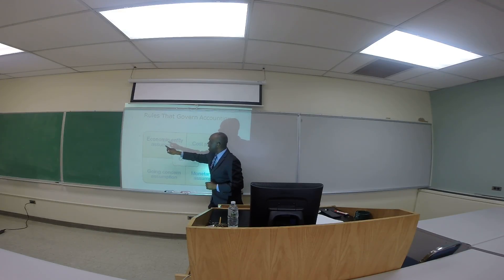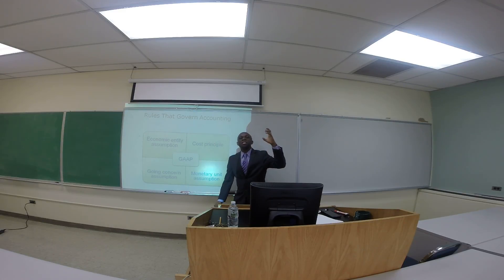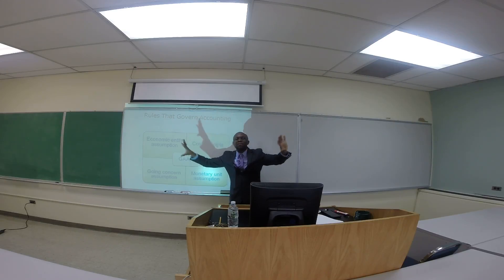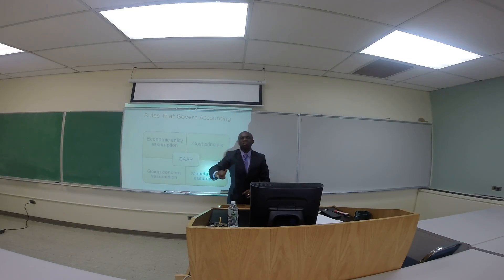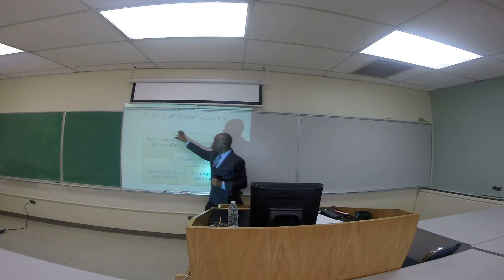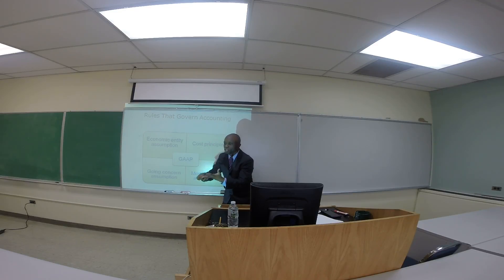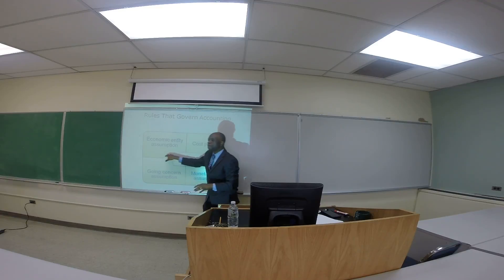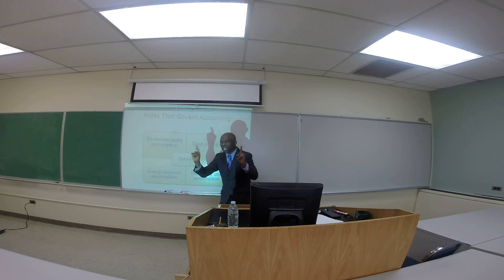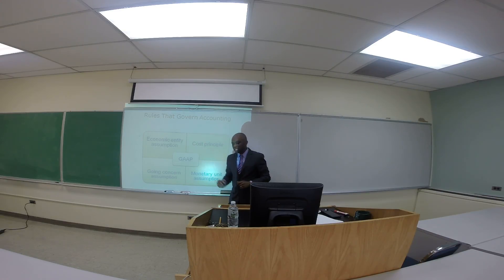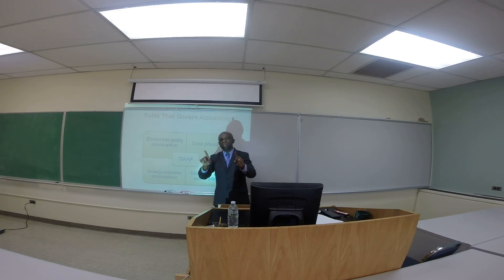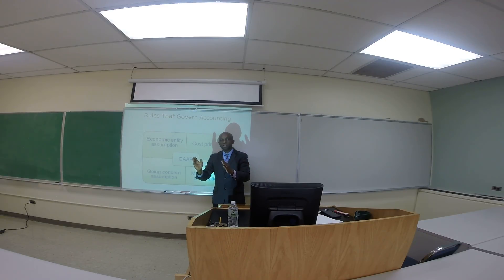Number one: the economic entity assumption. The company and the owner are separate and different for business purposes. This is true for every type of company — proprietorship, partnership, corporation, limited liability — it doesn't matter. This is true for business purposes. But legally, that is not true for all entities — only a corporation and a limited liability company are separate and different for legal purposes. Any type of business is separate and different from its owner for business purposes, and we call that the economic entity assumption.